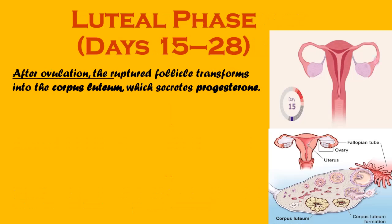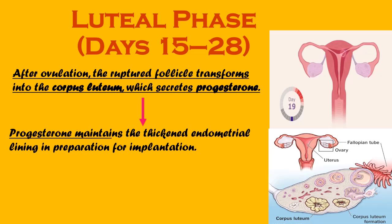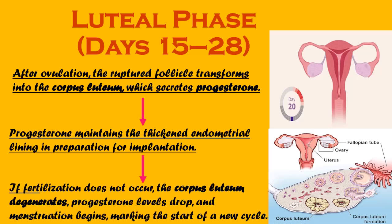Luteal phase, days 15 to 28: after ovulation, the ruptured follicle transforms into the corpus luteum, which secretes progesterone. Progesterone maintains the thickened endometrial lining in preparation for implantation. If fertilization does not occur, the corpus luteum degenerates, progesterone levels drop, and menstruation begins, marking the start of a new cycle.